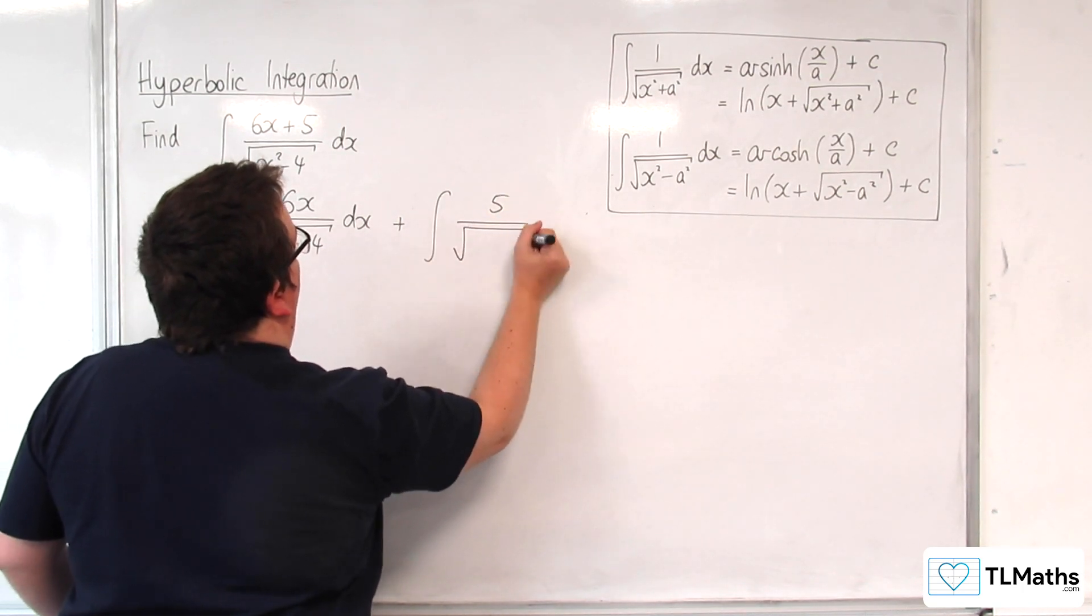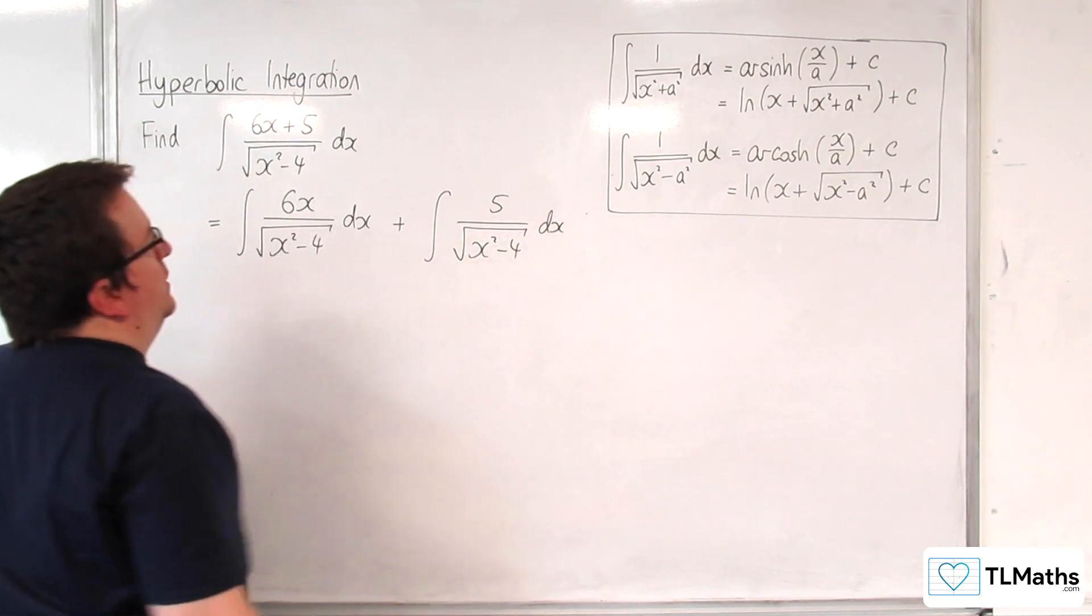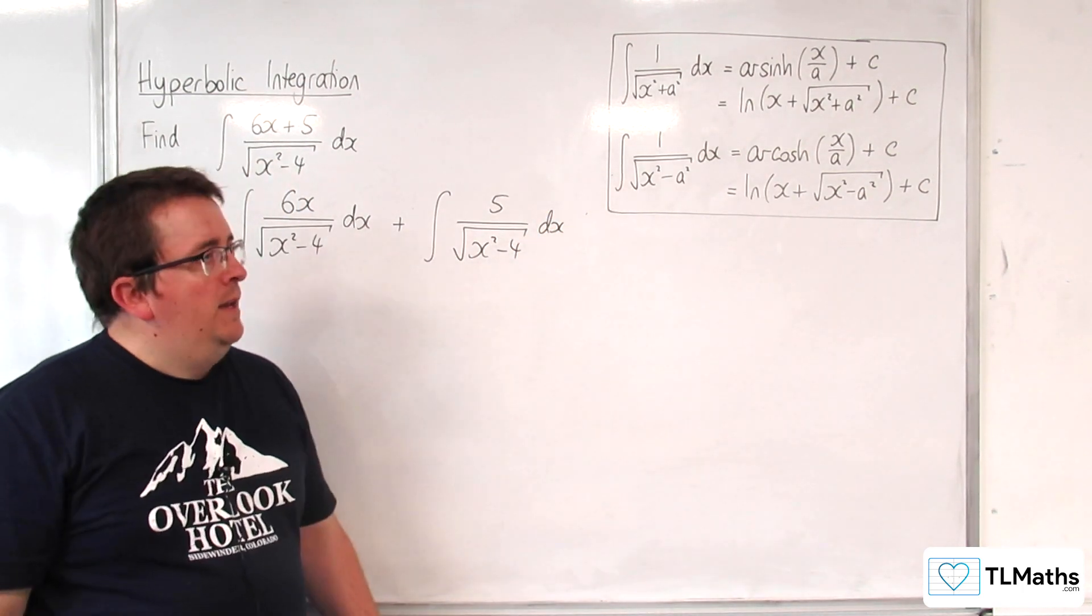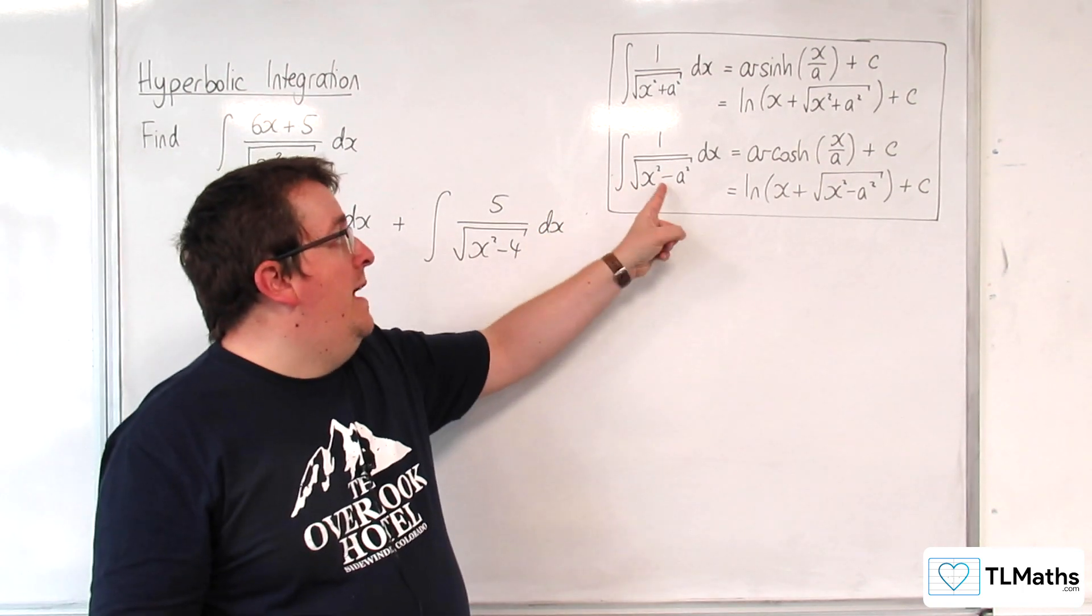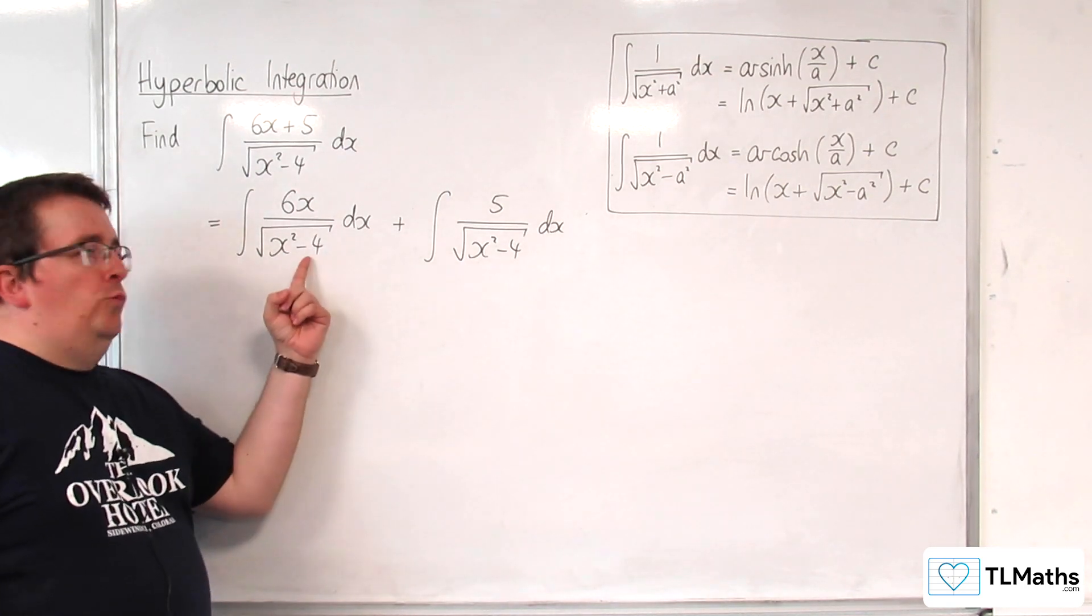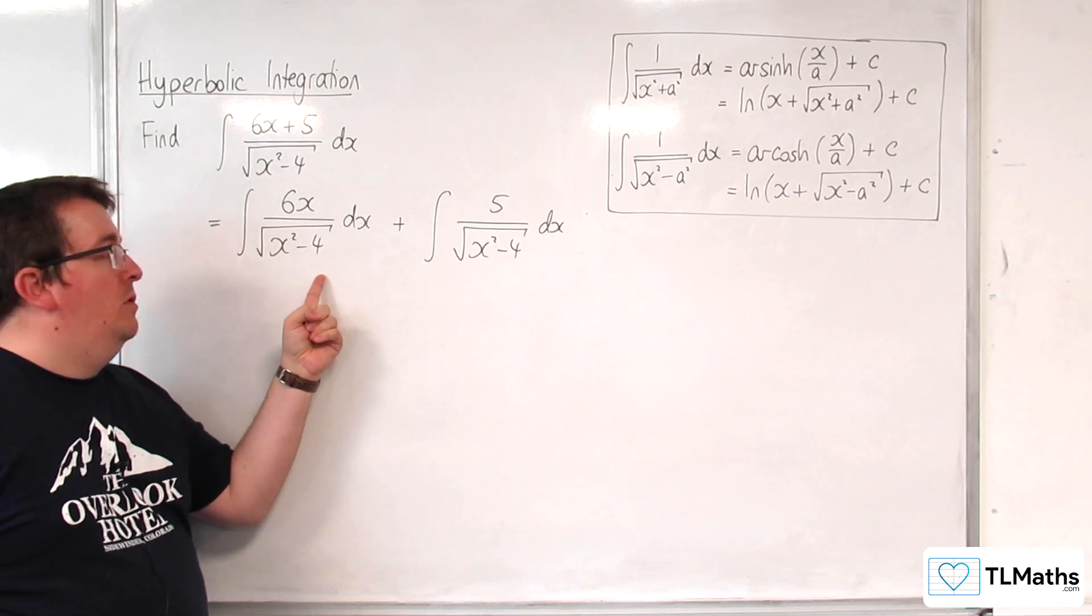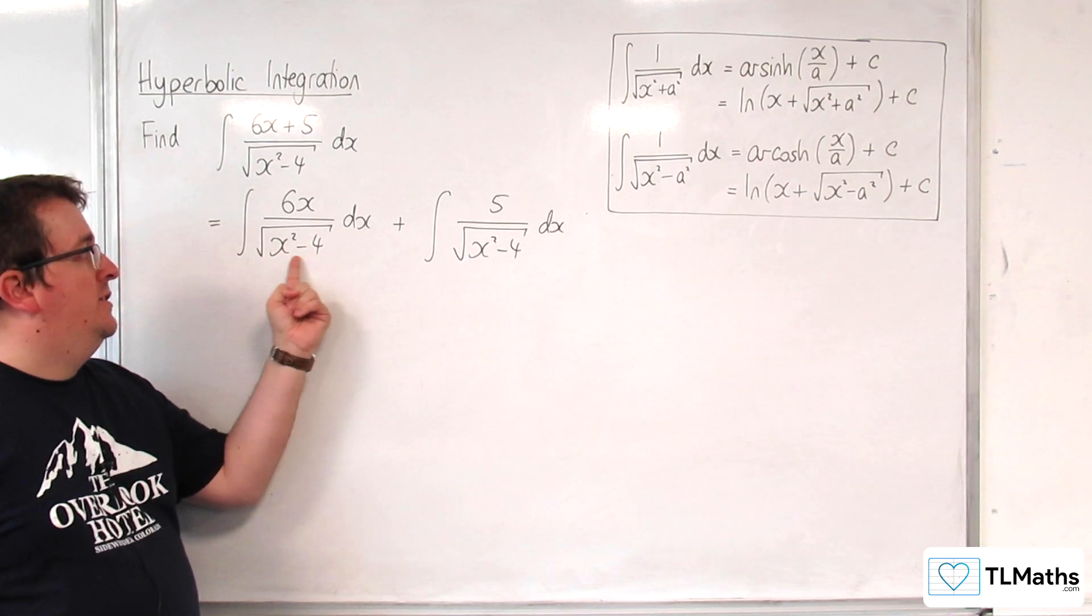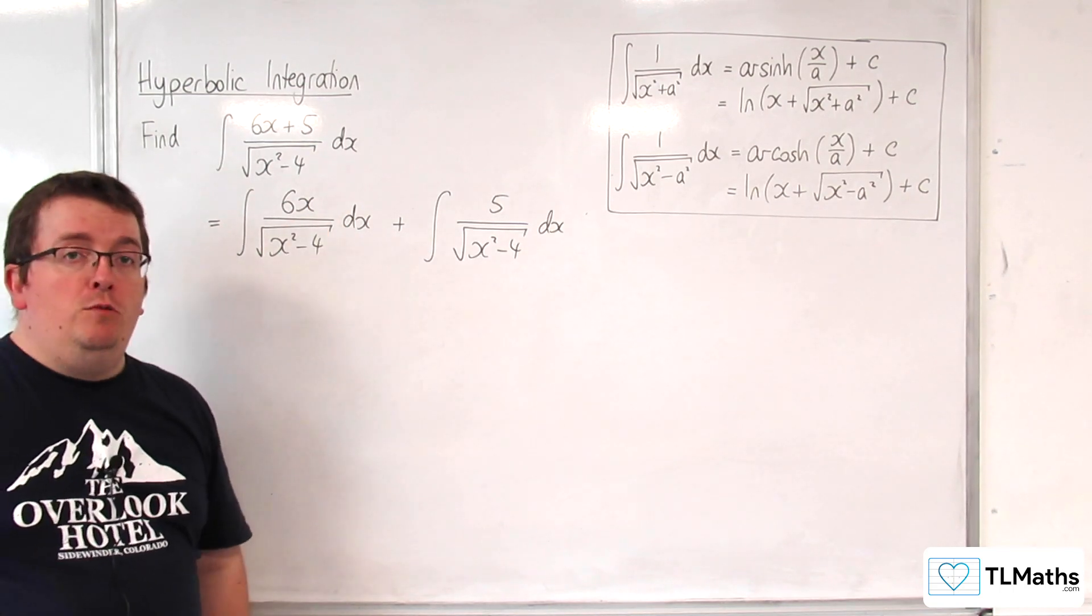Now the reason why you want to split it is because this is a multiple of that one there where a is 2 and this one can be integrated either by substitution or reversing the chain rule because the derivative of the inside here is 2x and we've got a multiple of that in the numerator.